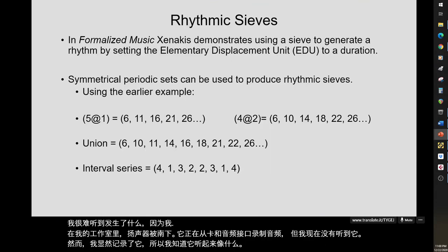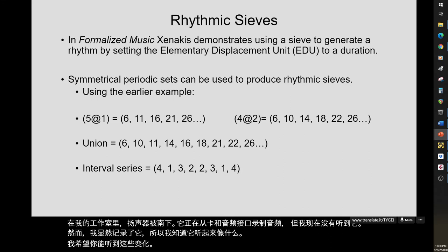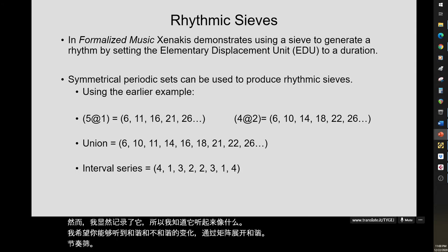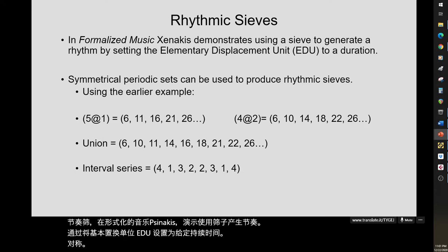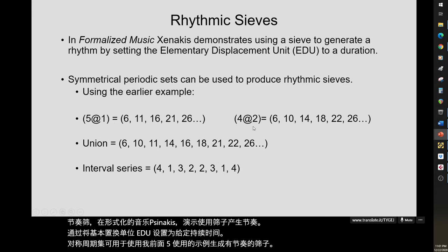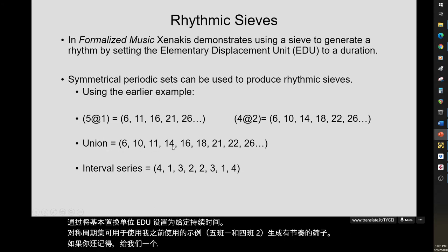I hope you were able to hear the changes in consonance and dissonance as the harmonies unfolded through the matrix. Rhythmic sieves: in Formalized Music, Xenakis demonstrates using a sieve to generate a rhythm by setting the elementary displacement unit (EDU) to a given duration. Using the earlier example of 5-shift-1 and 4-shift-2, the union gives us {6, 10, 11, 14, 16, 18, 21, 22, 26}.